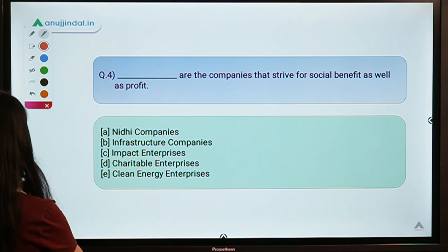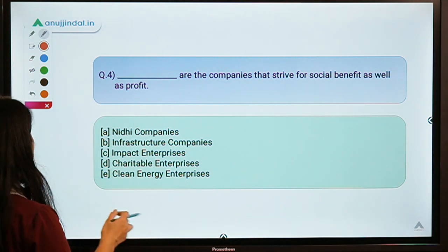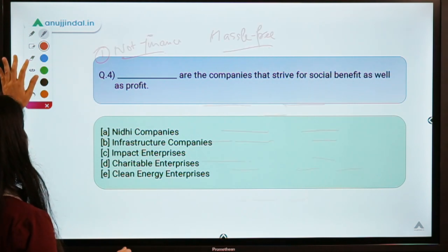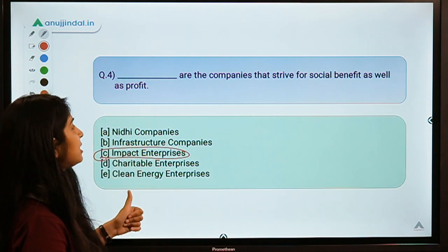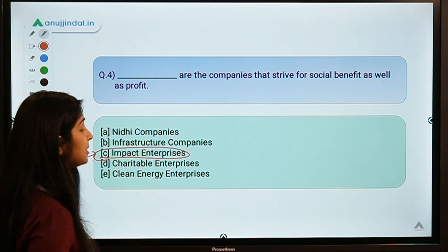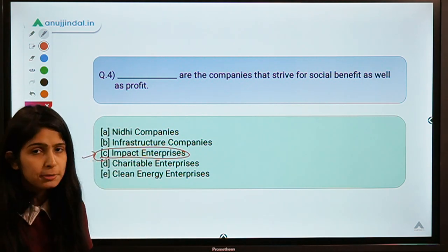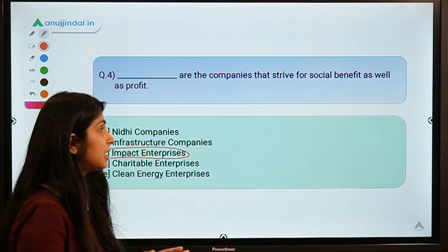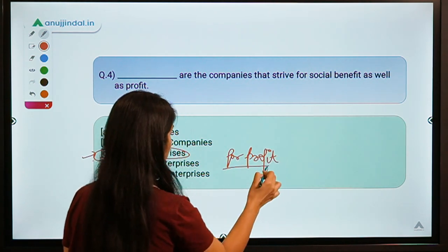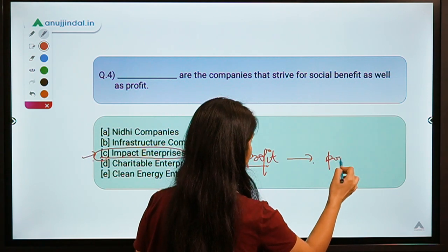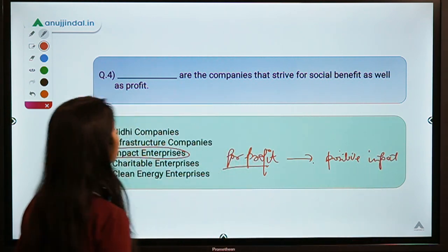The fourth question asks: 'Dash are the companies that strive for social benefit as well as profit.' The correct option is option C — Impact Enterprises. An impact enterprise is a for-profit organization that also seeks to have a positive impact on society, fulfilling both purposes simultaneously.